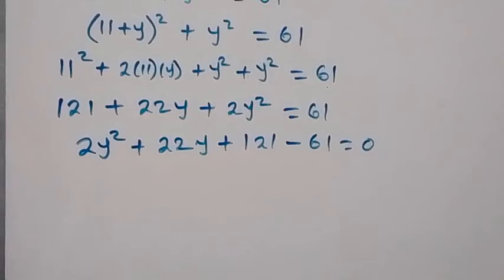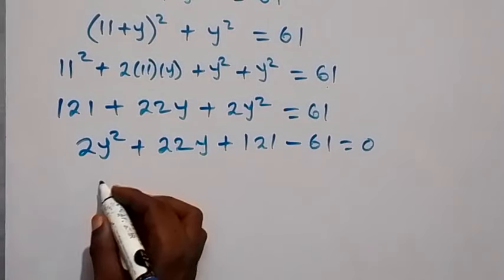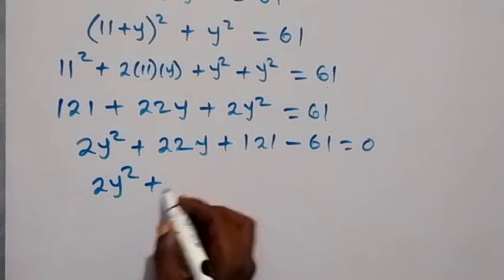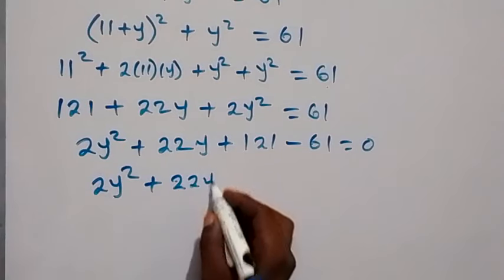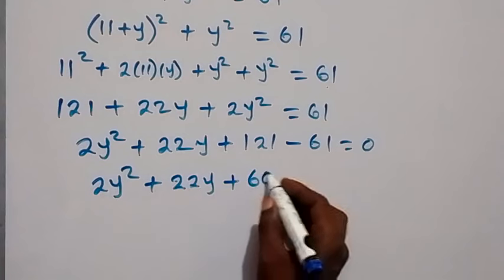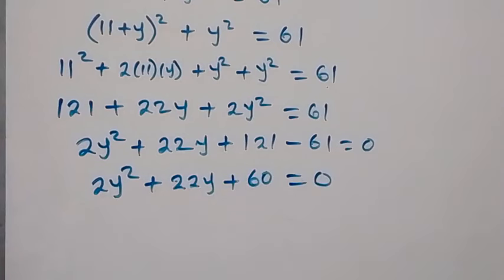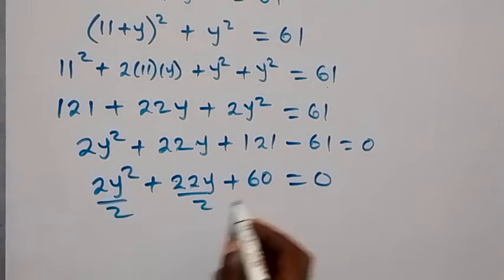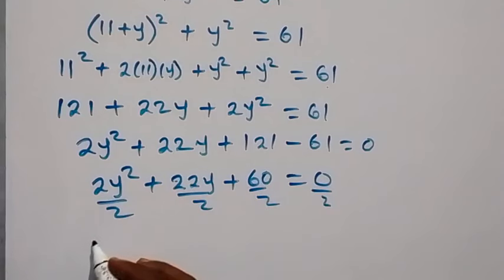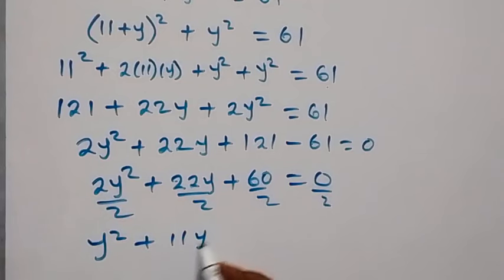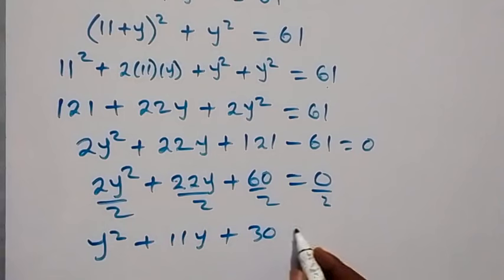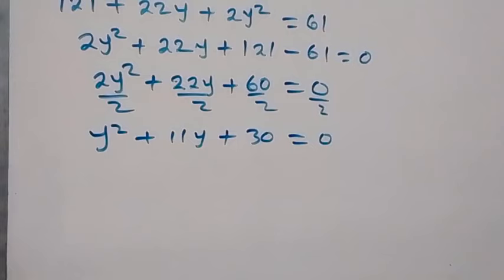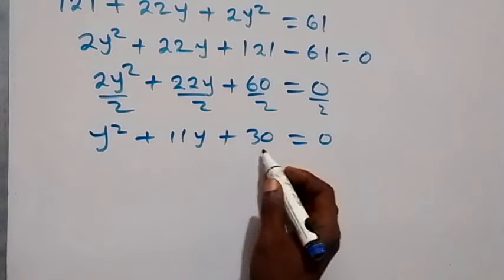Subtracting, we get 2y squared plus 22y plus 60 equals zero. We can simplify by dividing everything by 2, giving us y squared plus 11y plus 30 equals zero. This quadratic equation can now be factorized using the factors of 30.